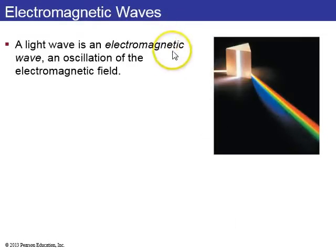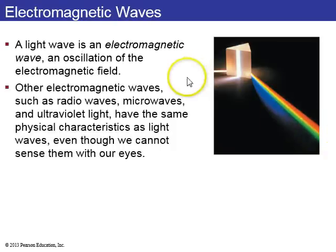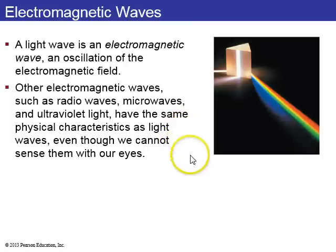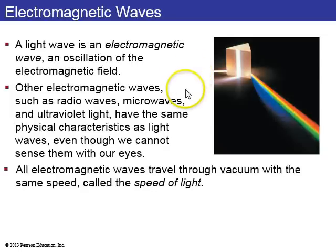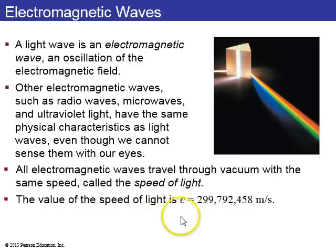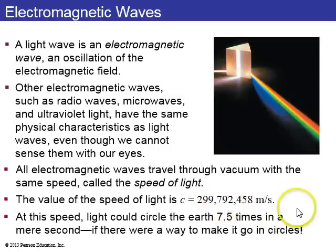Another kind of wave is an electromagnetic wave, of which light is one example. When you oscillate the electric and magnetic fields, you can get electromagnetic waves such as radio waves, microwaves, and ultraviolet light. They all have the same physical characteristics as light waves, even though for some we can't sense them with our eyes. Electromagnetic waves all travel through the vacuum with a speed of about 300,000 kilometers per second — 2.9979 times 10 to the 8 meters per second. At the speed of light, you could go around the earth 7.5 times per second.